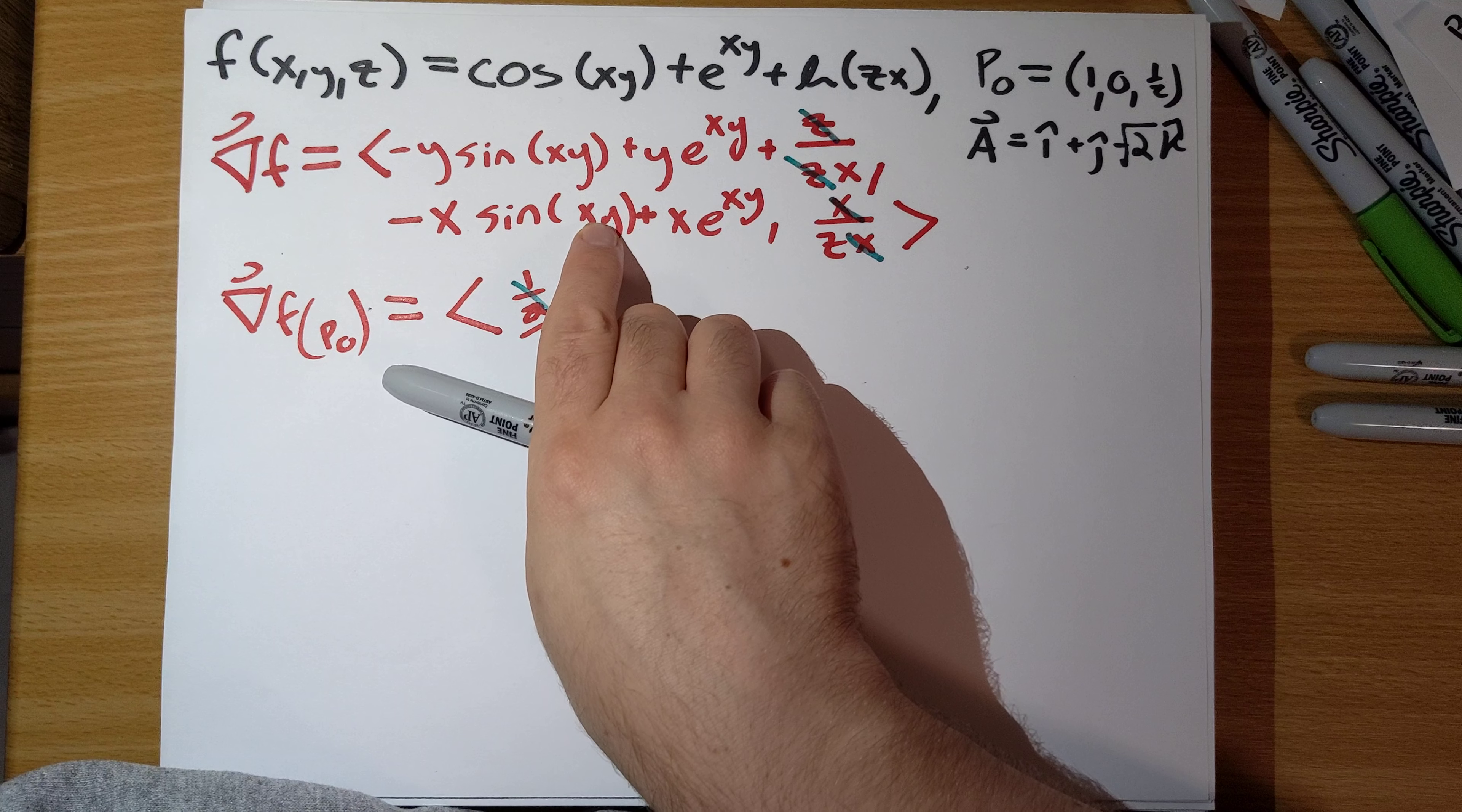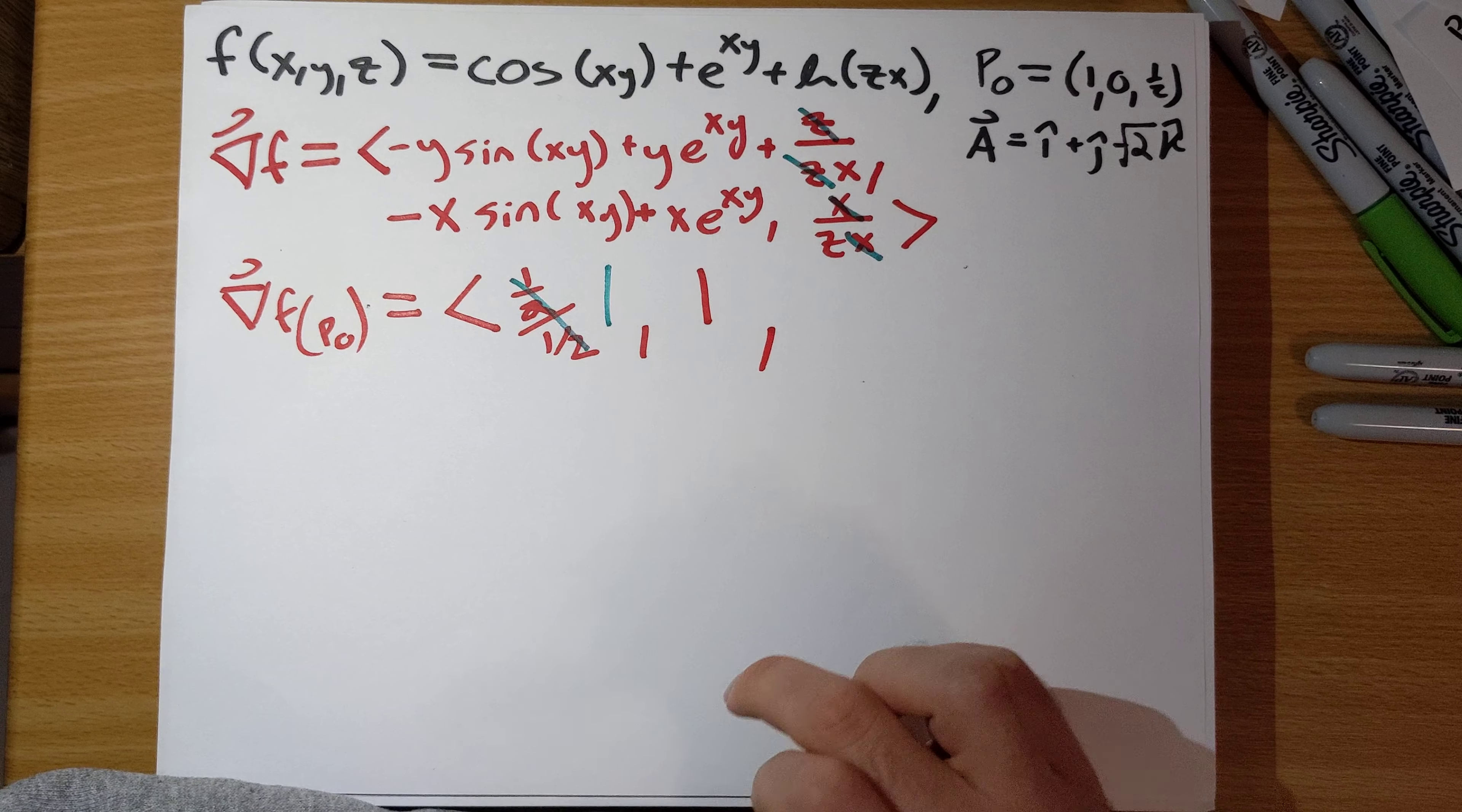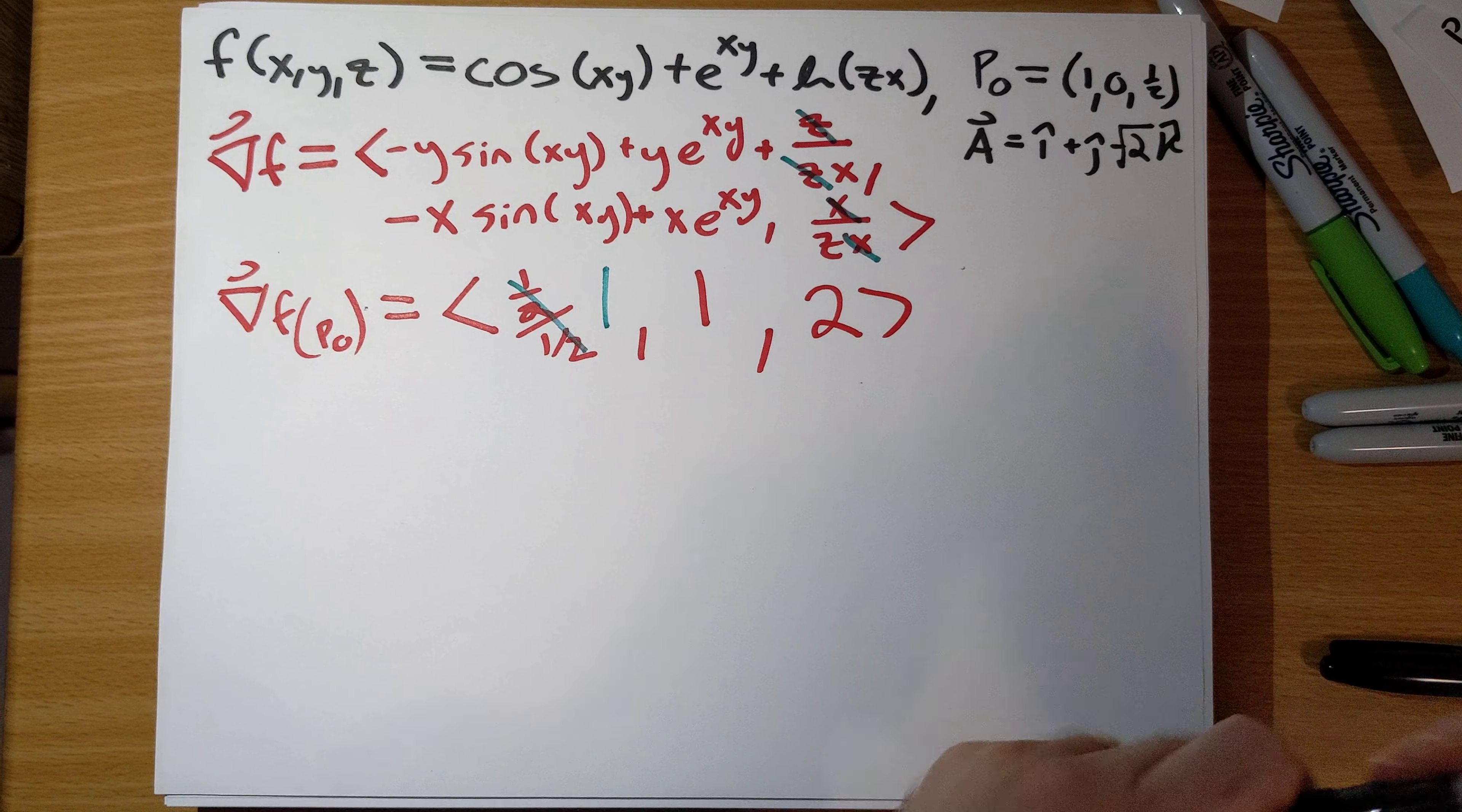y component here is negative 1 times sine of, 1 times sine of 0 is going to be 0 plus 1 e to the 0, that's 1. And then the third component here is 1 over z, that looks like 2. So it looks like our gradient at this point is the vector 1, 1, 2.